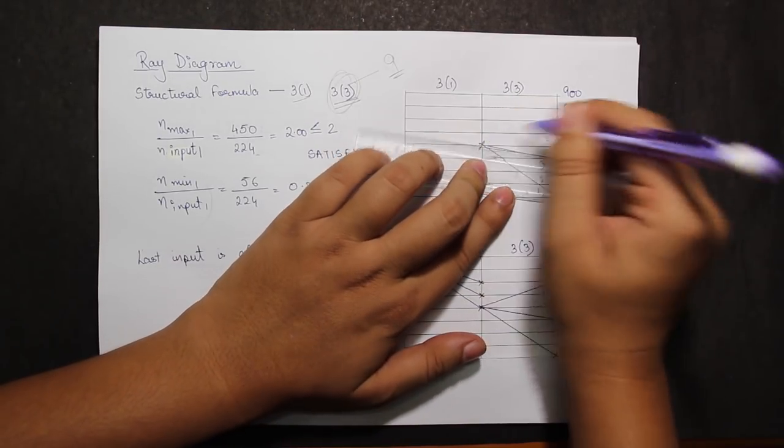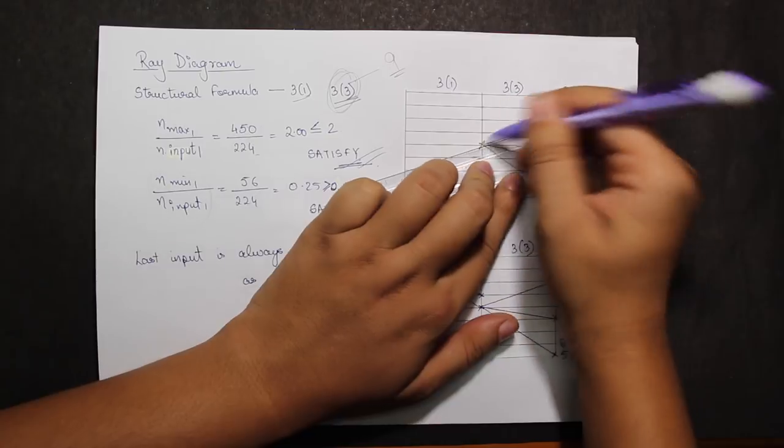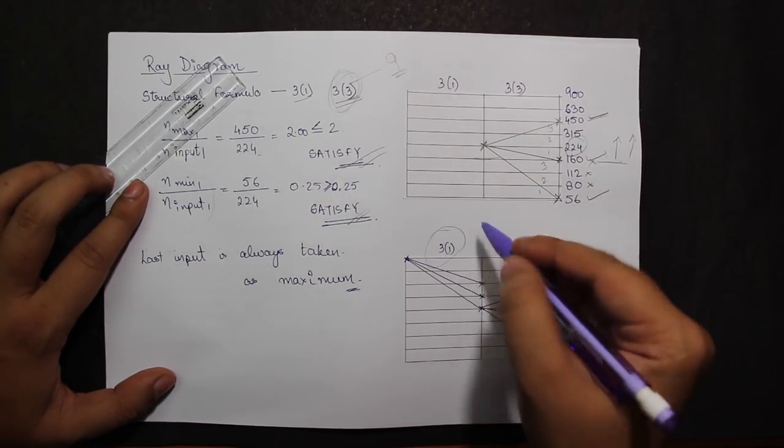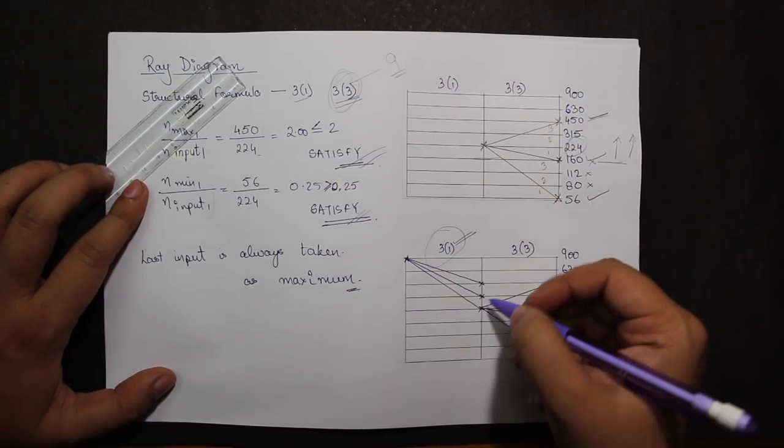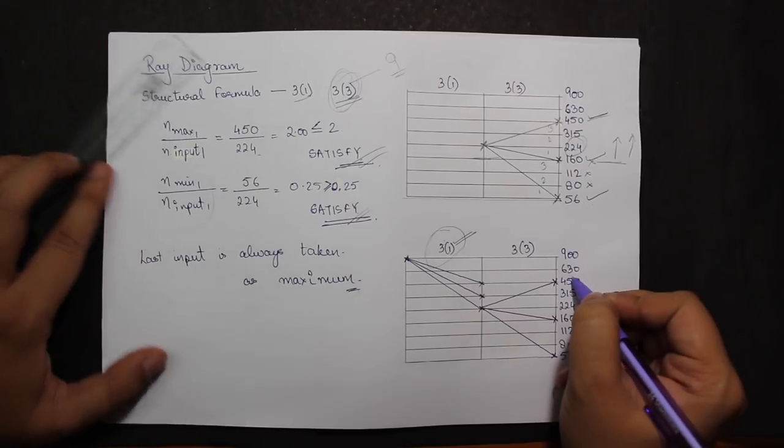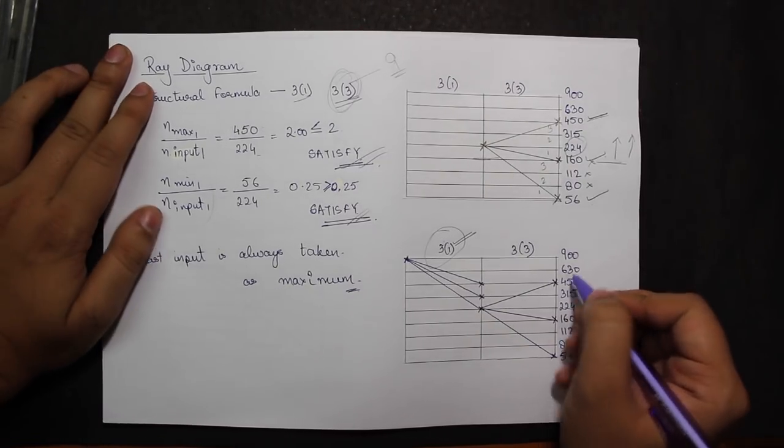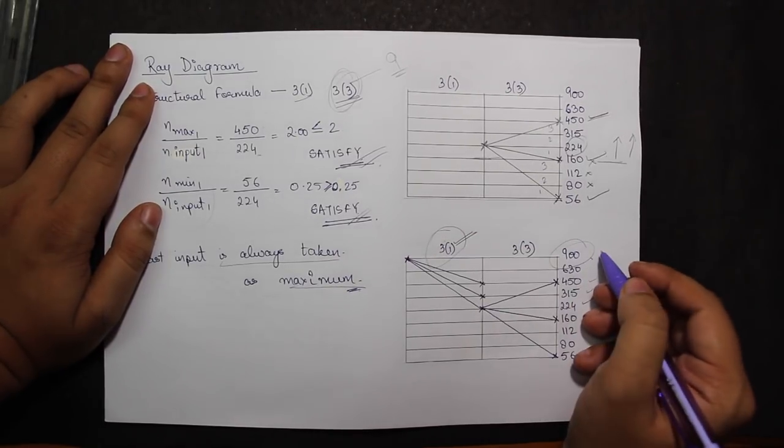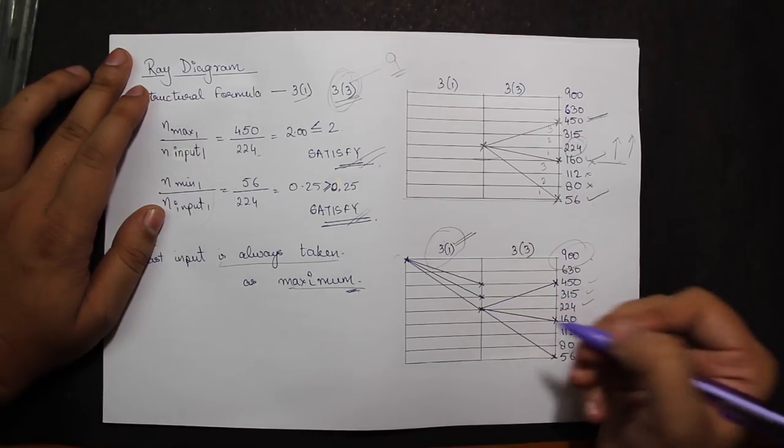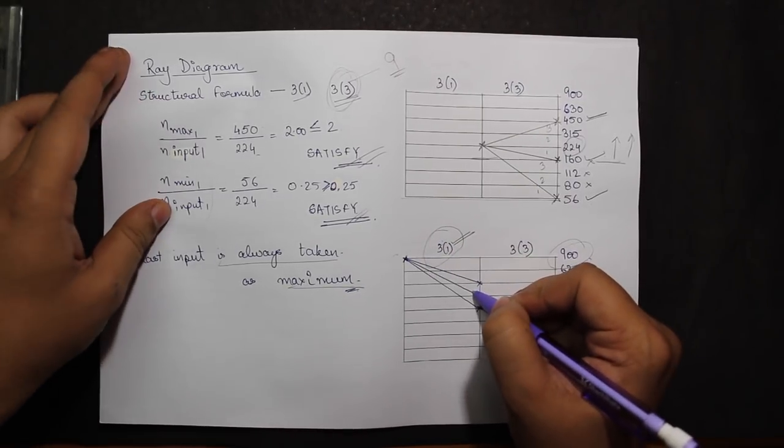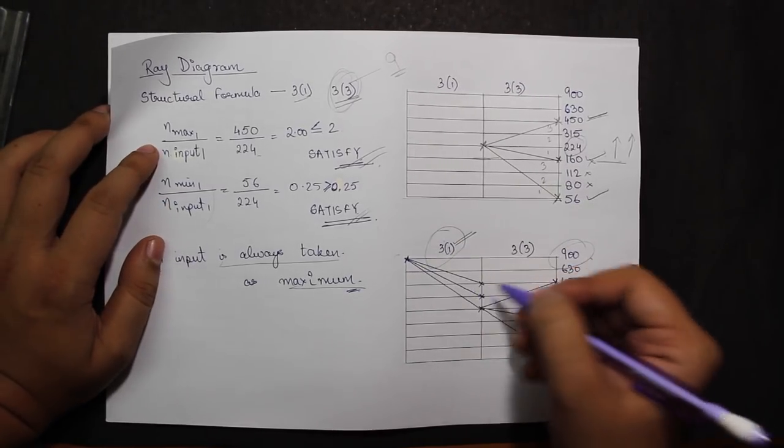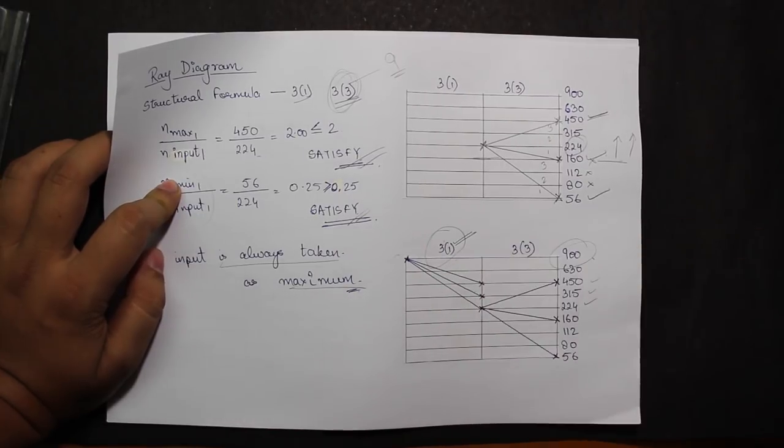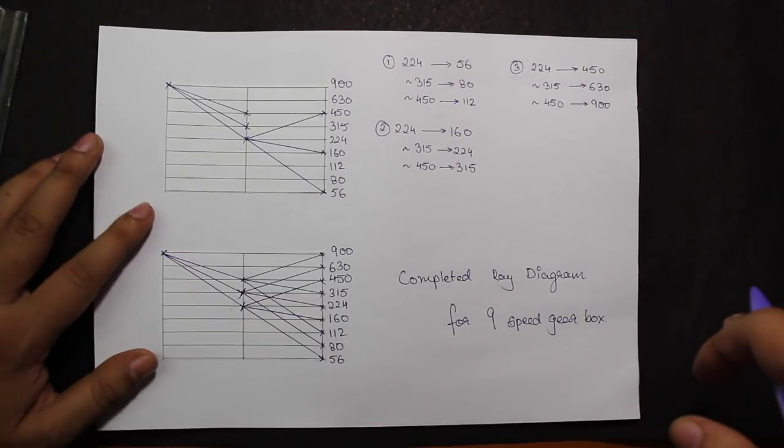Coming to the next step, I have three outside the bracket and one inside the bracket, or one interval and three speeds. So my speeds would range from 224, 315, and 450. The last input speed is always taken as the maximum value, which is present, so that would be 900. Now I'll be joining 900 with the speeds 224, 315, 450. So my diagram would look something like this as of now. Next I have to make the combinations with these three speeds.